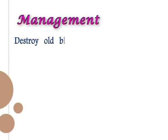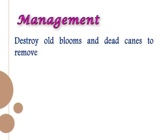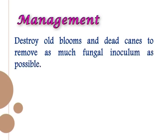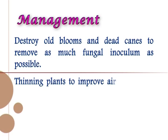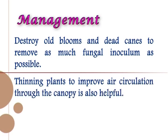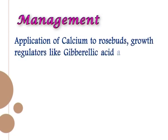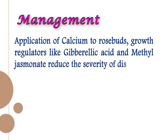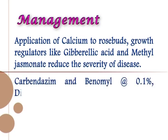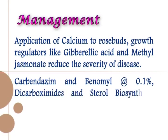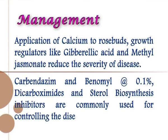Management: destroy old blooms and dead canes to remove as much fungal inoculum as possible. Thinning plants to improve air circulation through the canopy is also helpful. Application of calcium to rose buds and growth regulators like gibberellic acid and methyl jasmonate reduce the severity of disease. Carbendazim and benomyl at 0.1 percent, dicarboximides, and sterol biosynthesis inhibitors are commonly used for controlling the disease.